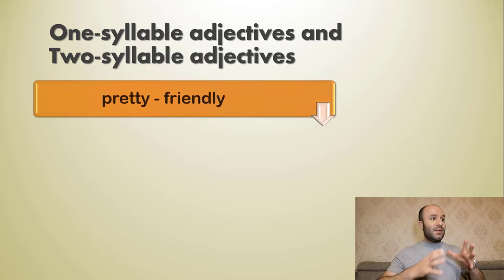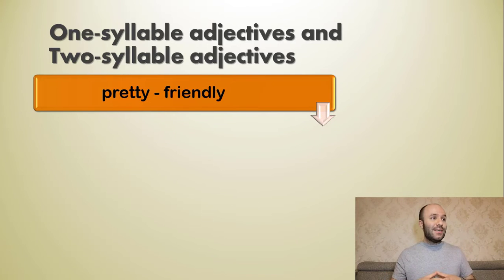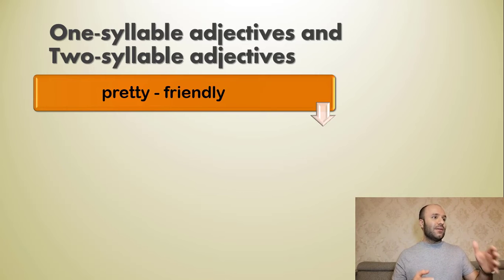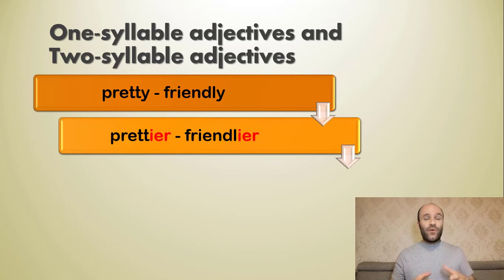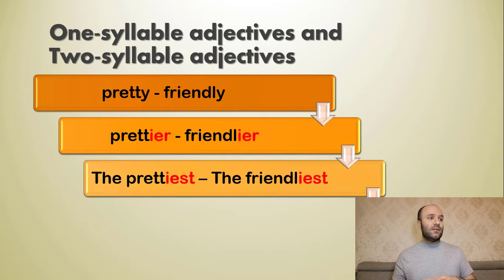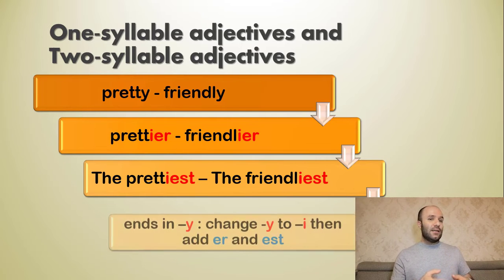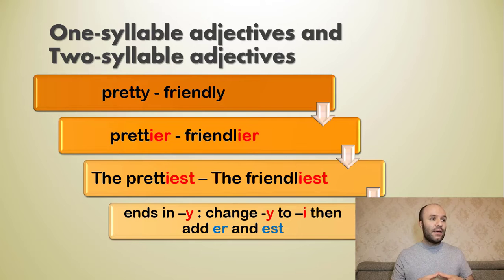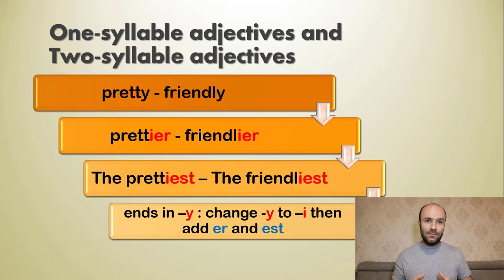For adjectives ending in '-y', like 'friendly' and 'pretty': the comparative is 'friendlier' and 'prettier', and the superlative is 'the friendliest' and 'the prettiest'. The rule is: adjectives ending in '-y' — you change 'y' to 'i', then add '-er' and '-est'.